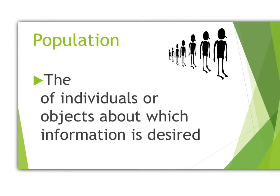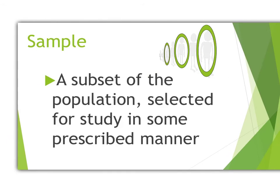A population is the entire collection of individuals or objects about which information is desired. For instance, a population might be every 18-year-old in the state of Texas. A sample, on the other hand, is a subset of the population — a smaller portion selected for study. So whereas our population was all 18-year-olds in Texas, a subset of that might be only the 18-year-olds in Conroe. If you look at the picture, the subset would just be the selected individuals shown in green — and that's the sample.